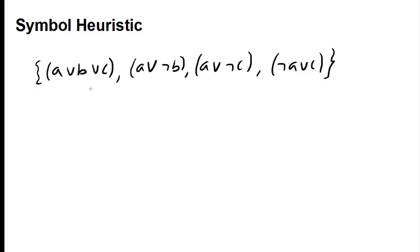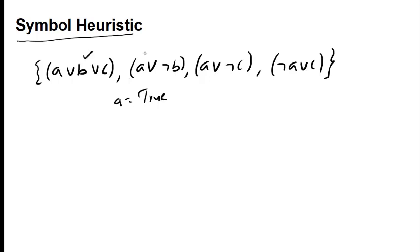When we cannot use unit propagation or pure literal — because no pure literal exists and no unit clause exists — we use symbol heuristics. A appears in all clauses, so we try setting A to true. When A is true, all clauses containing A in positive form are satisfied. Where negation of A appears, that literal becomes false and we are left only with C. This is the symbol heuristics approach in DPLL.